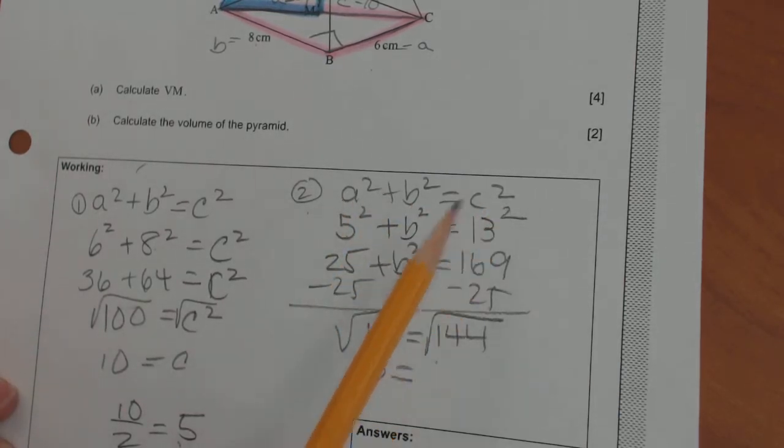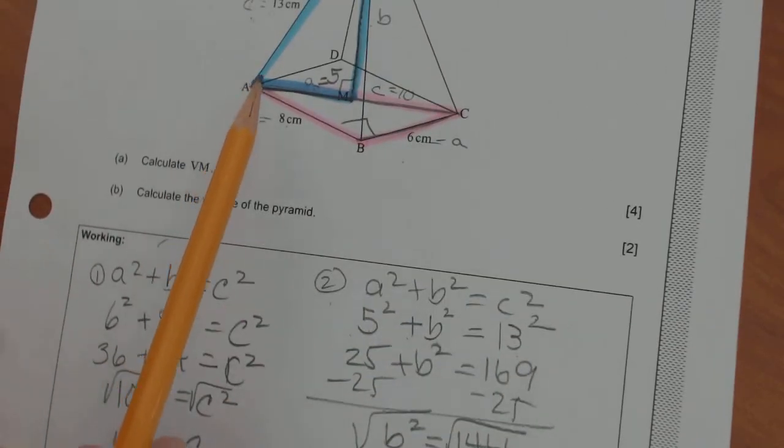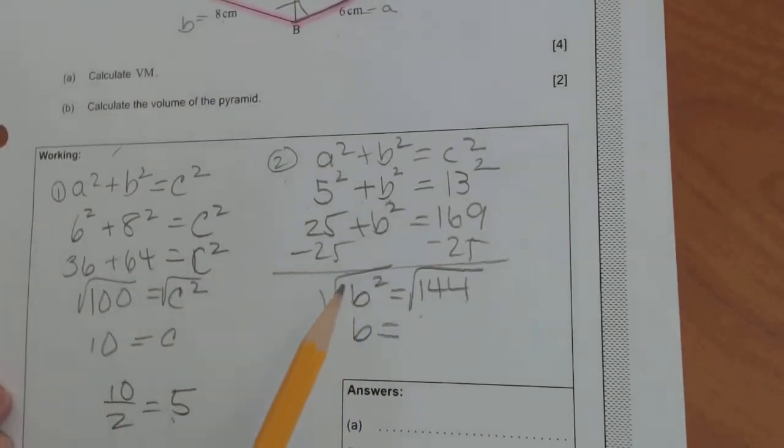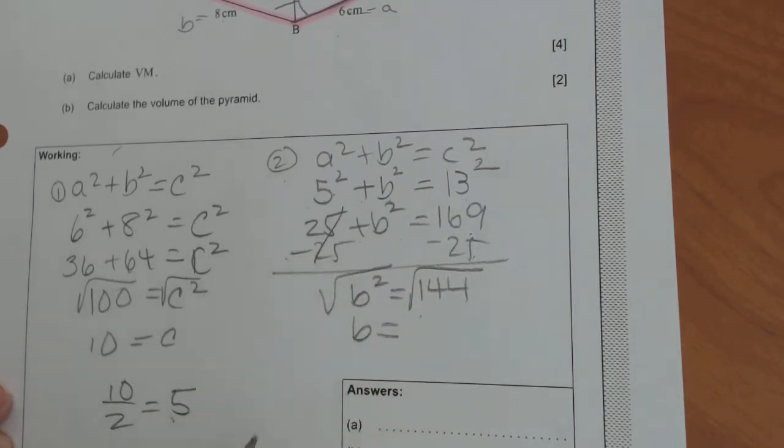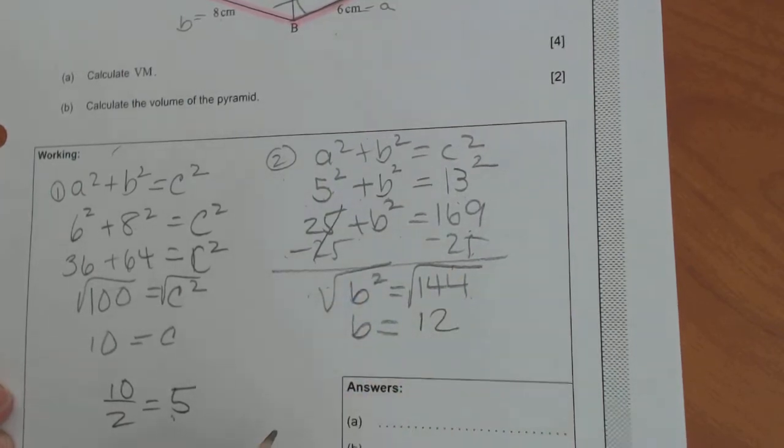So let me do that one more time. A squared plus B squared equals C squared. 5 squared plus B squared equals 13 squared. So that was the 5 plus the B equals the 13. So 5 squared is 25 plus B squared equals 169 minus 25. It's 169 minus 25 is 144. We got to square root both sides to get rid of the square. So B comes out to be 12.